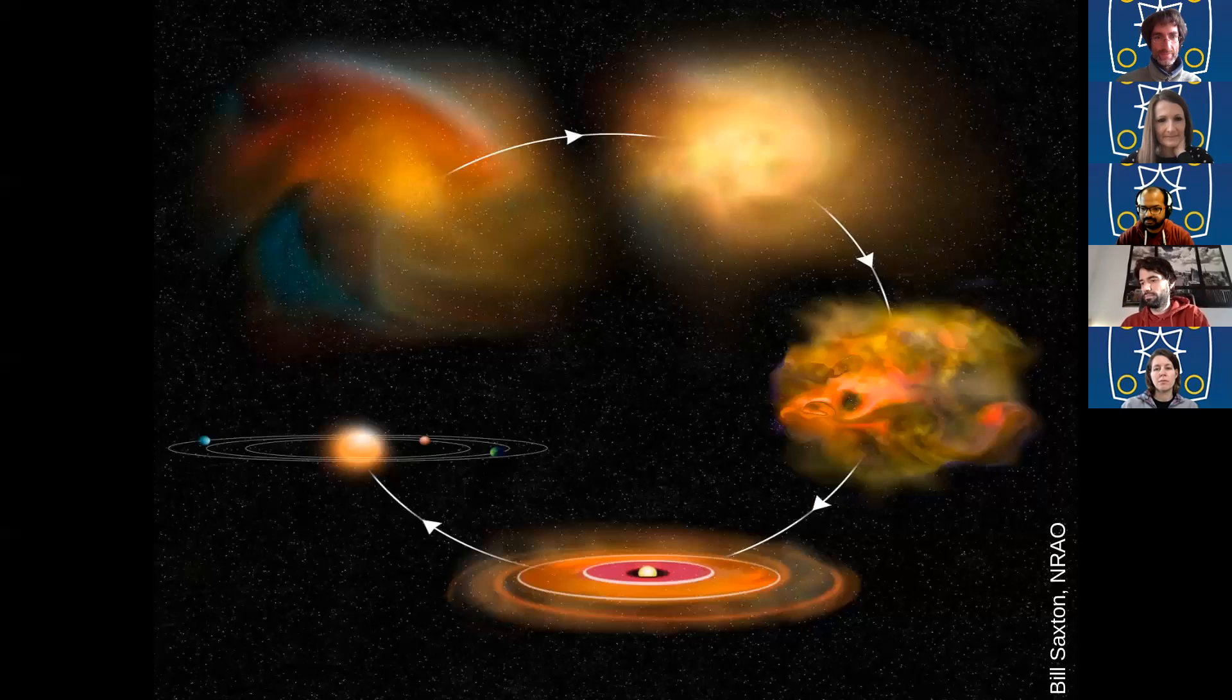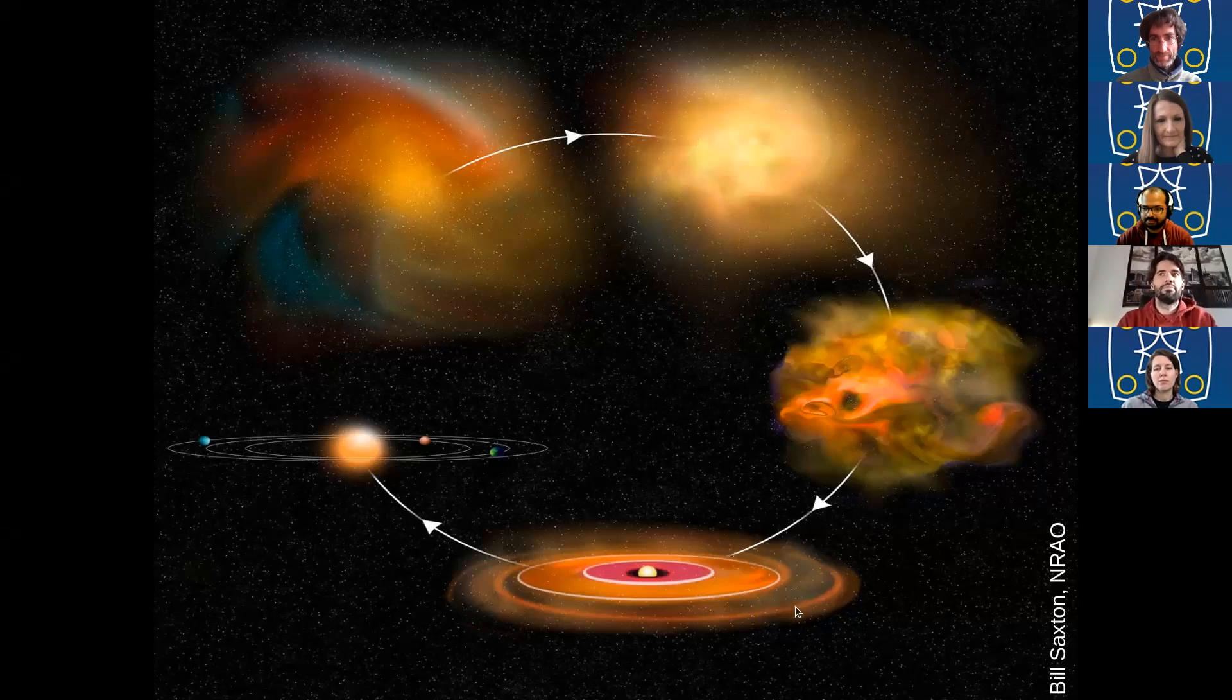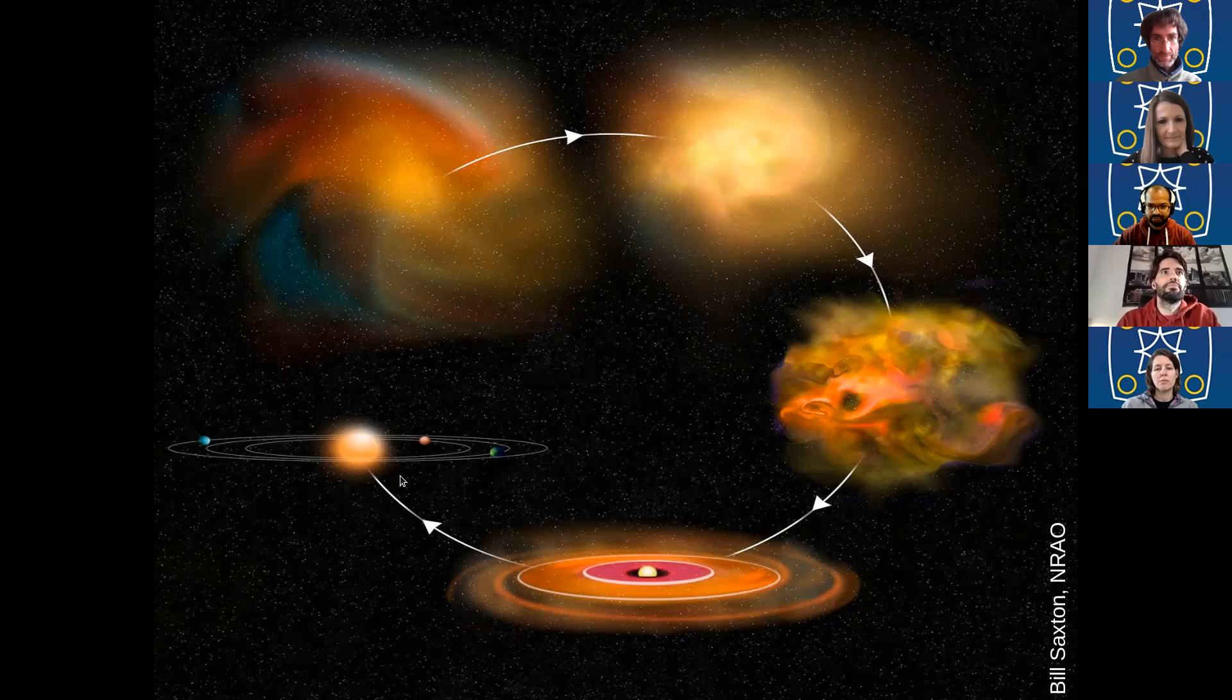Star formation actually starts in the densest and coldest clouds in the Milky Way. And when these clouds collapse, they end up as a protoplanetary disk because of the conservation of angular momentum. And in these disks, some planets will be formed. And in the end, we end up with a solar system like our own and potentially some planets and life.